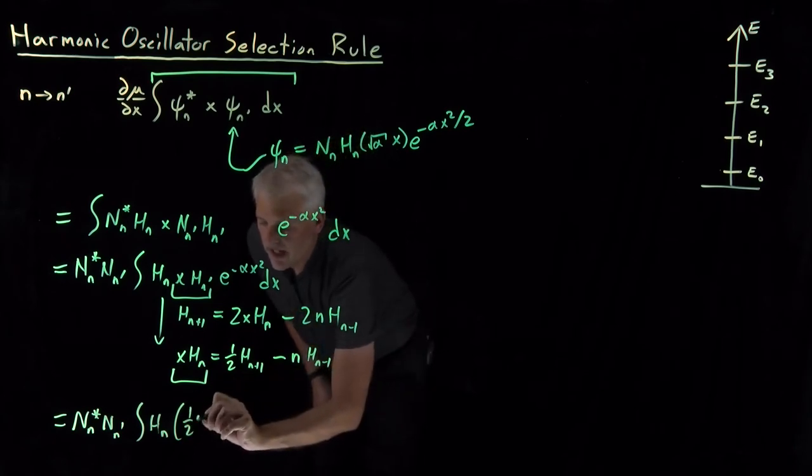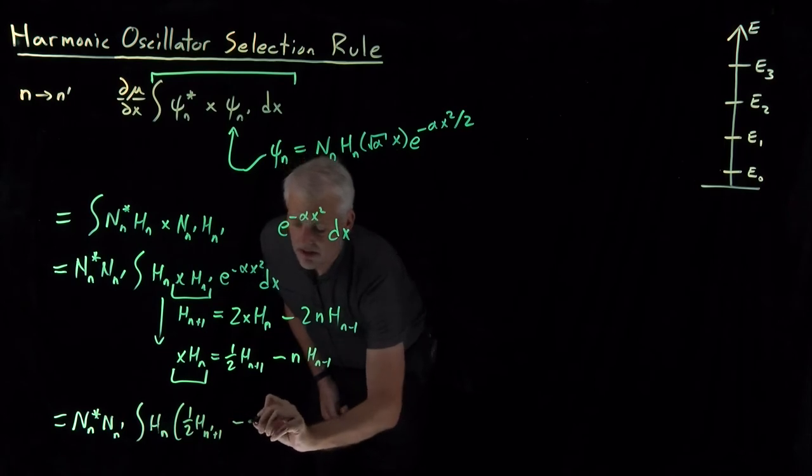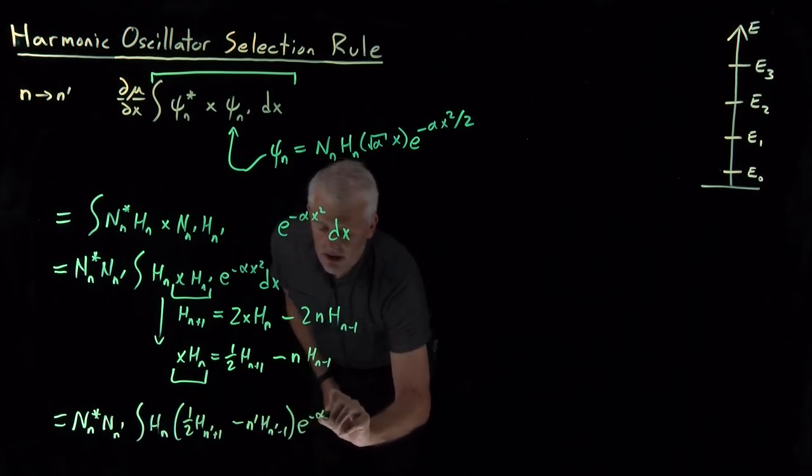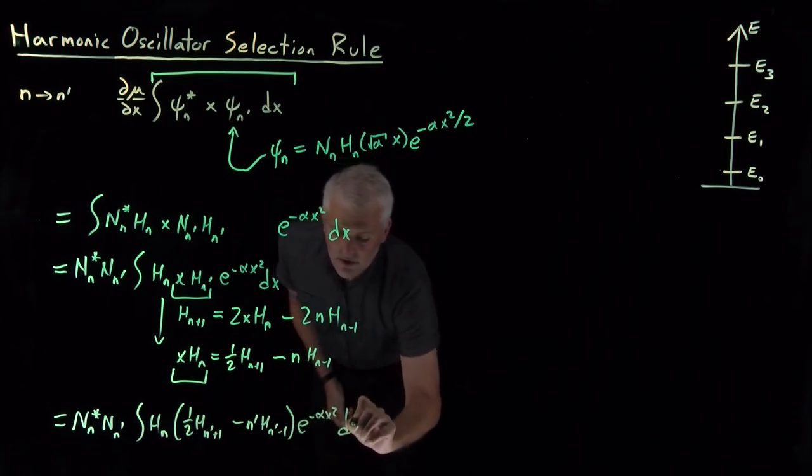Minus n prime times the n minus n prime minus 1st polynomial with a Gaussian integrated over x.